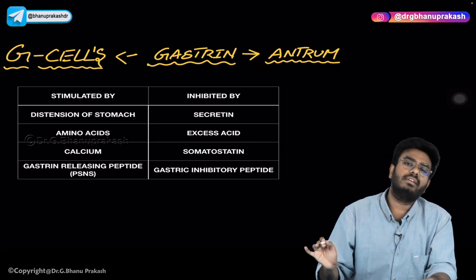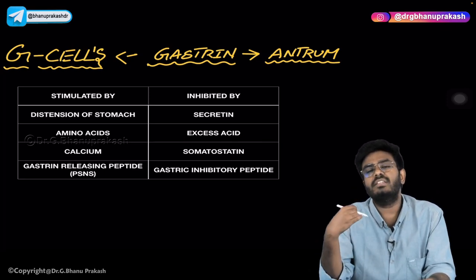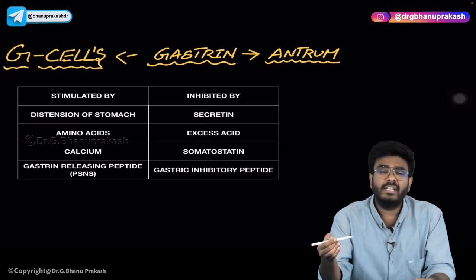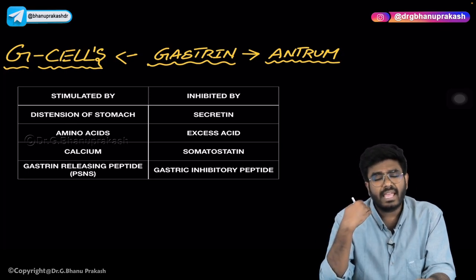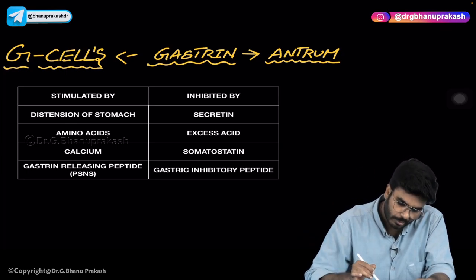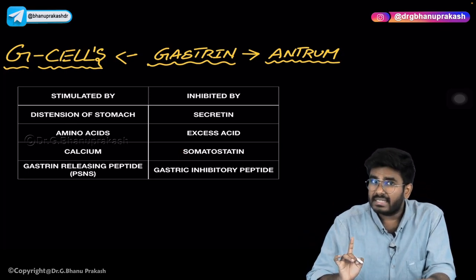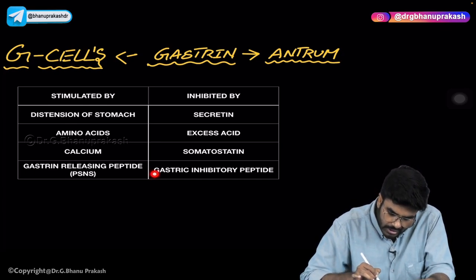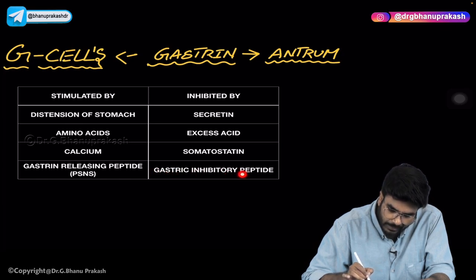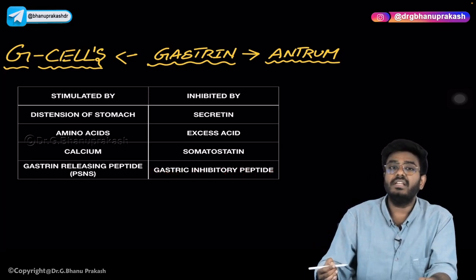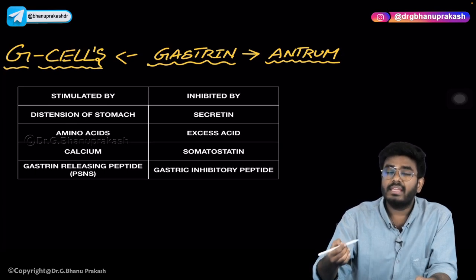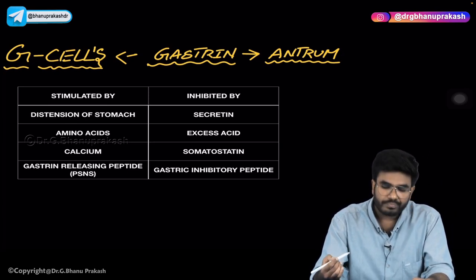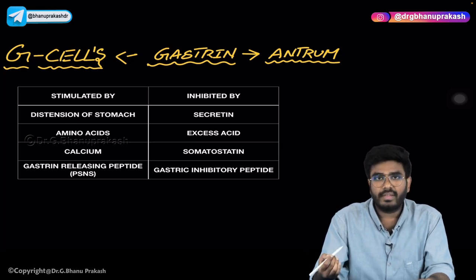Somatostatin — a universal inhibitor — inhibits gastrin, insulin, growth hormone, and everything. Somatostatin comes from the D cells of the gastric glands and inhibits the release of gastrin. Gastric inhibitory peptide (GIP) also inhibits the release of gastrin, as suggested by its name.